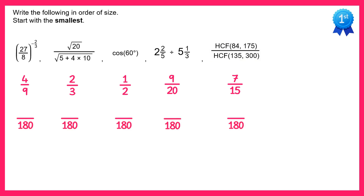For the first one, to get from 9 to 180 we multiply by 20, so 4 times 20 is 80. For the next one, 3 to 180 is times 60, so 2 times 60 is 120. The next one we multiply by 90, so 1 times 90 is 90. For the fourth one, 20 to get to 180 is multiplied by 9, and 9 times 9 is 81. For the final one, to get from 15 to 180 we multiply by 12, and 7 times 12 is 84.